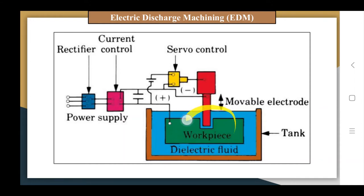When a sufficient potential difference is applied between these two electrodes, the dielectric breaks down to form a spark. The spark strikes the work surface and increases the localized temperature to as high as 10,000 degrees Celsius, resulting in localized melting and vaporization of the work material, and hence material removal occurs.